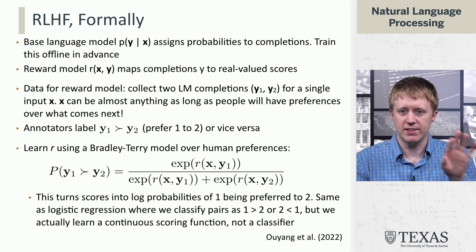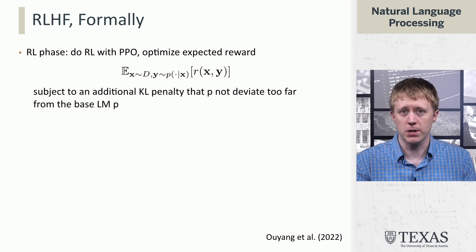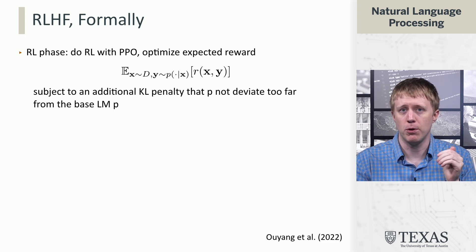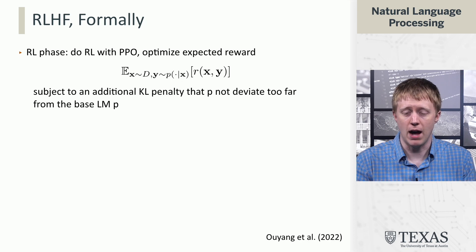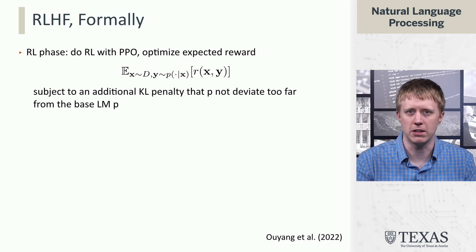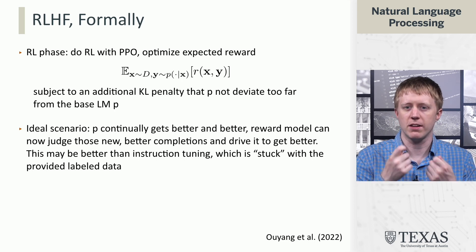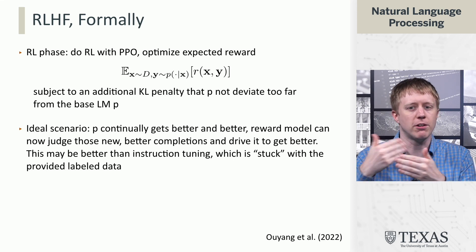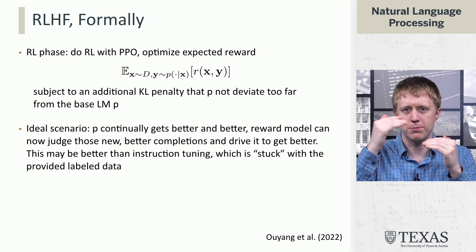Once we have this R, we set the human preference data aside and just do reinforcement learning. We optimize expected reward over a large dataset of prompts: we sample a prompt X, the model produces output Y, we assess the reward, and use PPO — proximal policy optimization — to optimize it. We're not just optimizing for expected reward; there's also a penalty that forces the model to stay close to the base language model. Ideally the model keeps producing better responses, and the reward model can still judge that one response is better than another — whereas with instruction tuning, you're always fine-tuning on data provided directly by people.